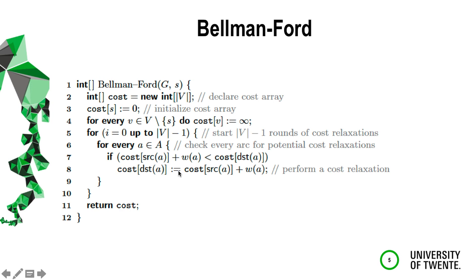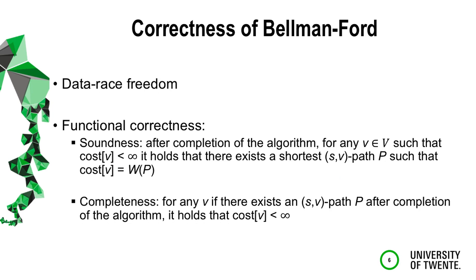Lines six to nine is where we can parallelize on GPUs. There is also a hidden barrier at the end of each round. Finally, at the end of the algorithm we return 'cost' as the shortest distances from source to all other vertices. To prove correctness we need to prove data race freedom and functional correctness.